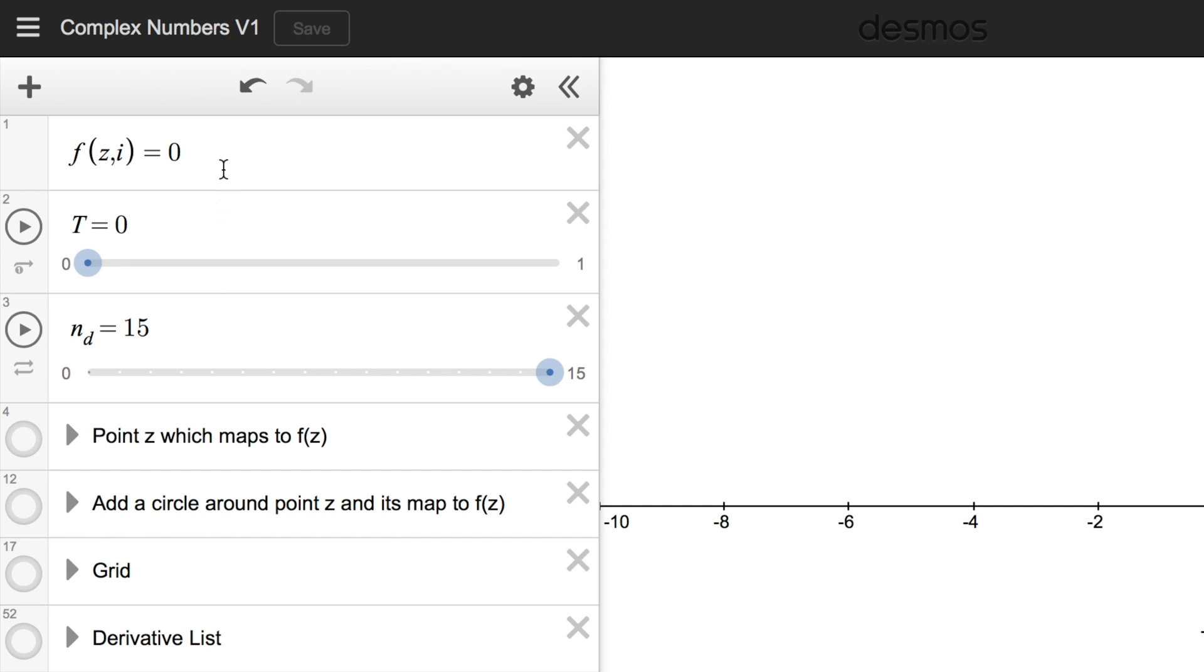So, might as well start simple. We have a complex function f, and it's equal to currently zero. The way we use the plane, there's a couple options. There's just a point. You can add a circle around the point, which may be useful for visualizing stuff like the fundamental theorem of algebra. And there's also a customizable grid. This list of derivatives is just a little bit of maintenance, not really a folder that you need to worry about.